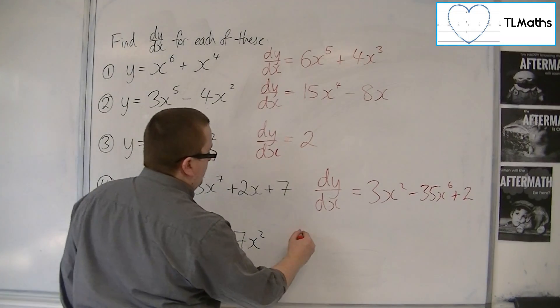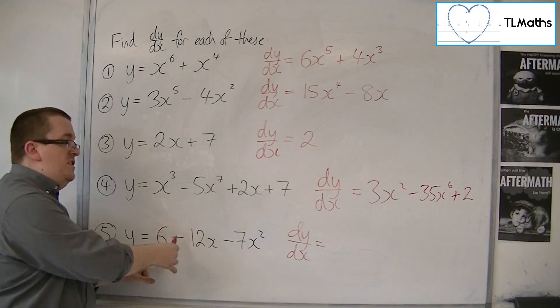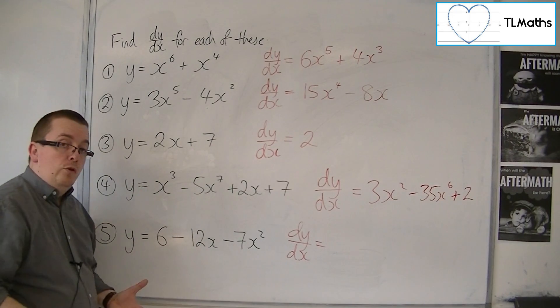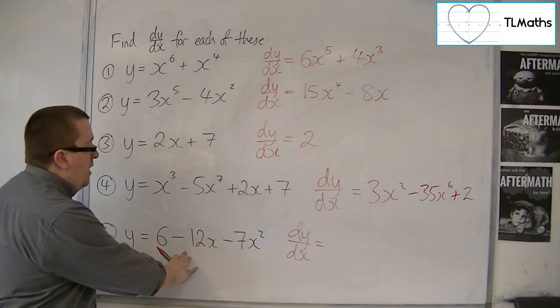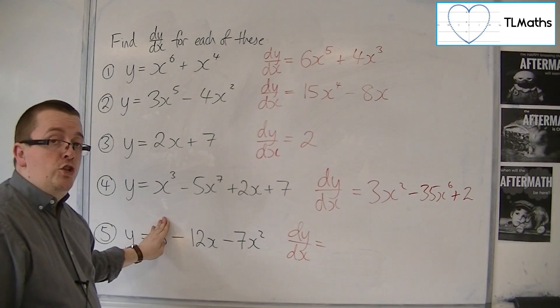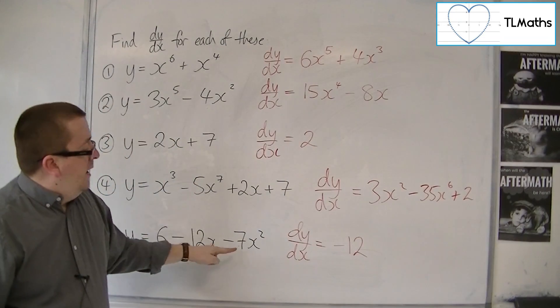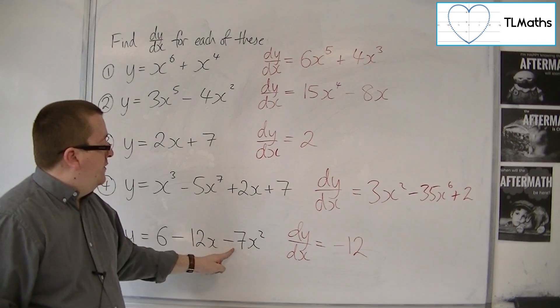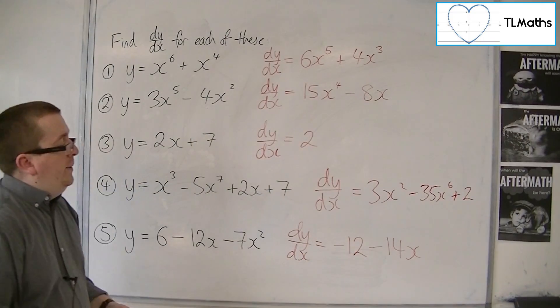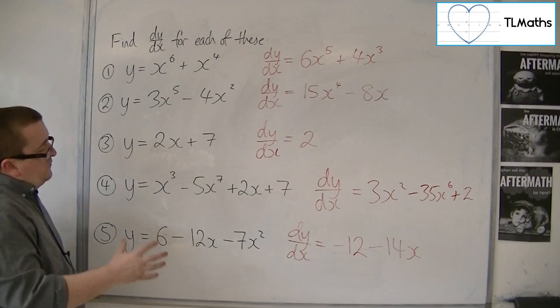For number 5, we have 6, so this lone number, this constant, when differentiated, goes to 0 and disappears. Then we've got -12x. Well, 2x differentiates to 2, so -12x differentiates to -12. And then we've got -7x^2. So the 2 comes down to the front, multiplies with the -7, and then take 1 off the power. So we just have -12 - 14x.